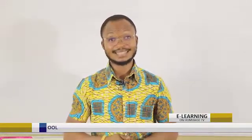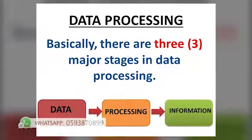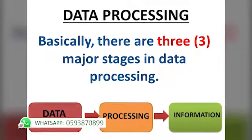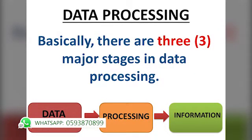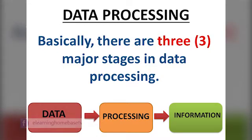Still explaining data processing — there are more than three stages, but basically and mainly we have three major stages. Later on we will look into all the other stages. The first stage is called the data stage, where you do all the gathering of data. You work on the data and then you input that data for processing. So we have the data stage, we have the processing stage, and we have the last stage which is the information stage. These are the basic major stages in data processing.